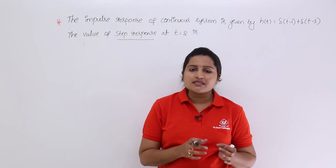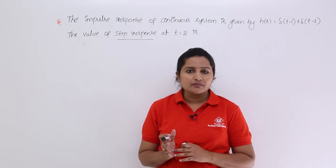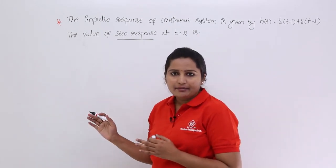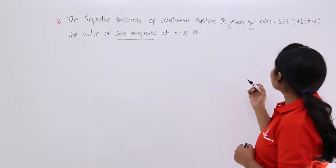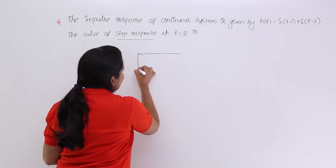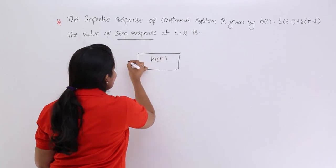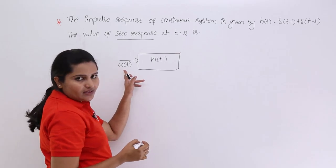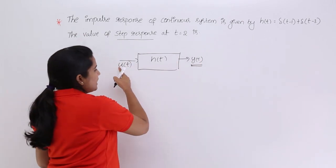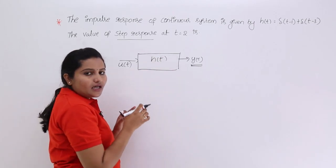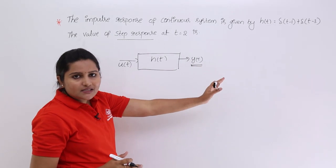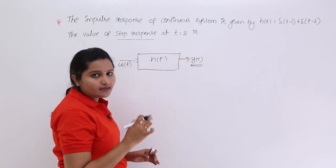Whenever we give a step signal as the input, whatever response or output we get from the system is called the step response of the system. So indirectly, the input of the system is a step, with impulse response h(t) = δ(t−1) + δ(t−3). They are asking: what is the response of the system at t = 2? That means we have a system with impulse response h(t) and we need to give input x(t) = u(t), and find the step response at that particular time instant.